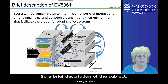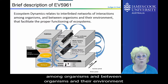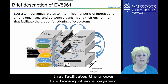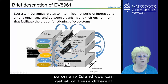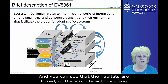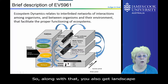A brief description of the subject: Ecosystem Dynamics relates to interlinked networks of interactions among organisms and between organisms and their environment that facilitates the proper functioning of an ecosystem. Looking at this model, these are the habitats on any one island — you can get all of these different habitats, and you can see that the habitats are linked, with interactions going on between them and animals travelling between the different habitats.